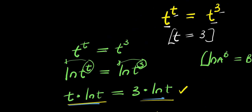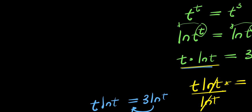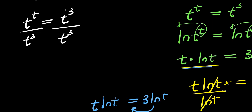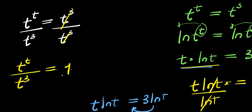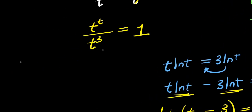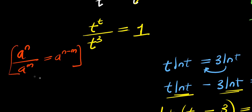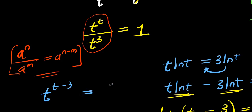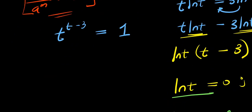Having solved this using the natural log approach, we can solve the problem again using a very different approach. If I have t to the power t equals t to the power 3, I divide both sides by t to the power 3. Using the identity a to the power m divided by a to the power n equals a to the power m minus n, I get t to the power (t minus 3) equals 1. Taking the natural log of both sides: natural log of t to the power (t minus 3) equals natural log of 1.